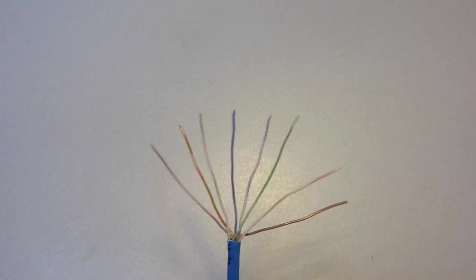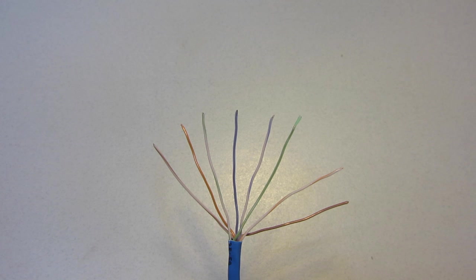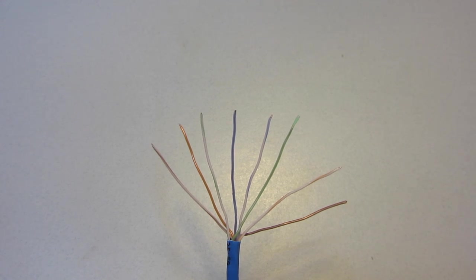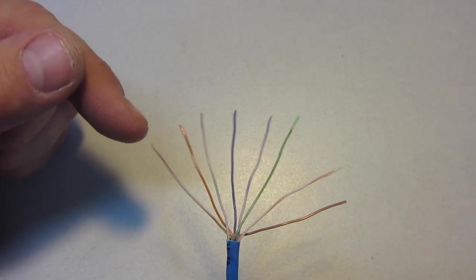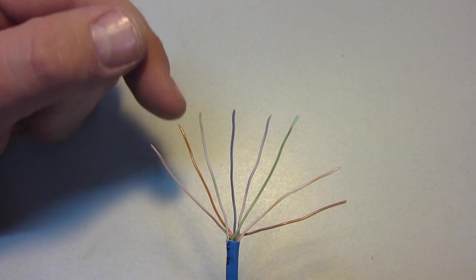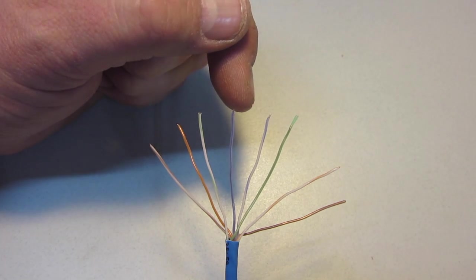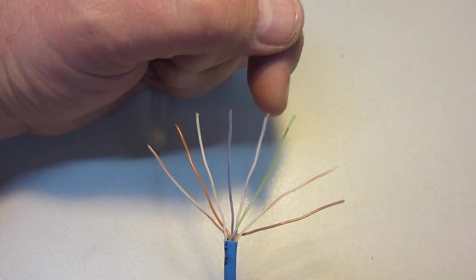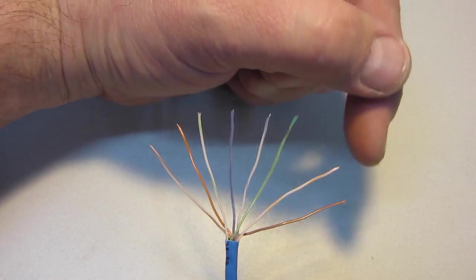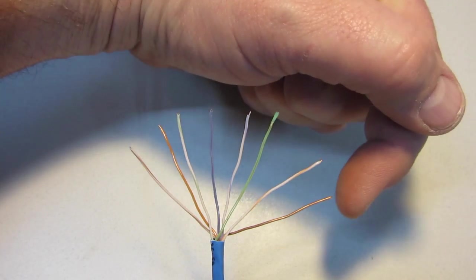From left to right, organize the wires in the following color code: orange and white striped, orange, green and white striped, blue, blue and white striped, green, brown and white striped, brown.